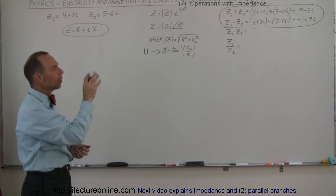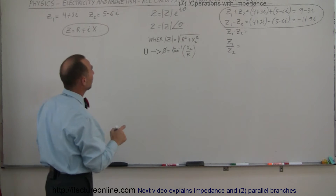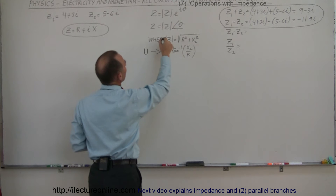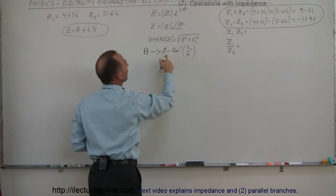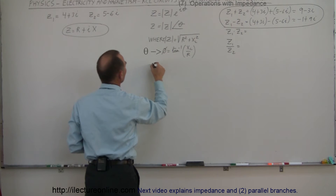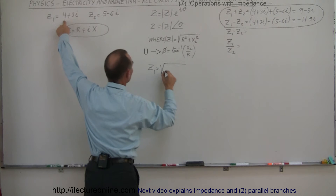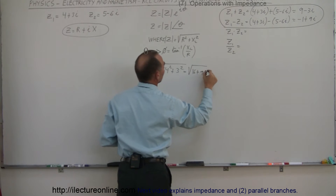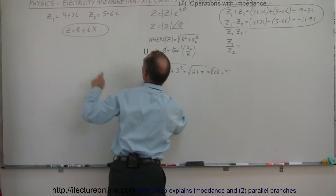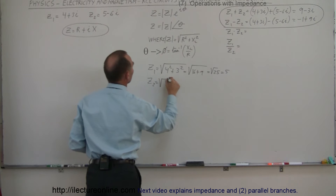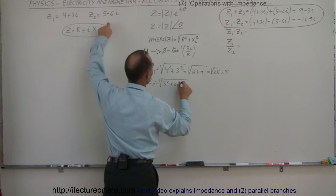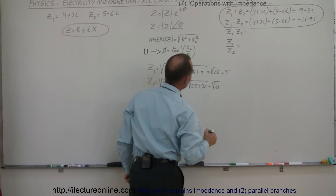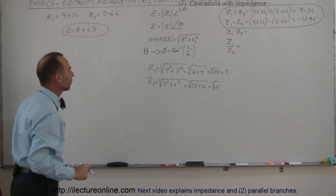For multiplying and dividing, there's an easier way. We convert our complex numbers to polar form — magnitude and phase angle. To find the magnitude of Z1: the square root of 4 squared plus 3 squared equals the square root of 16 plus 9, which is the square root of 25, equal to 5. For Z2, that's the square root of 5 squared plus 6 squared, equal to the square root of 61, approximately 7.8.